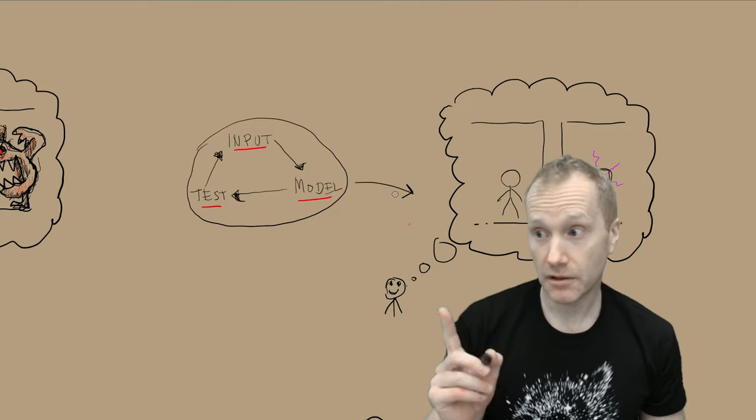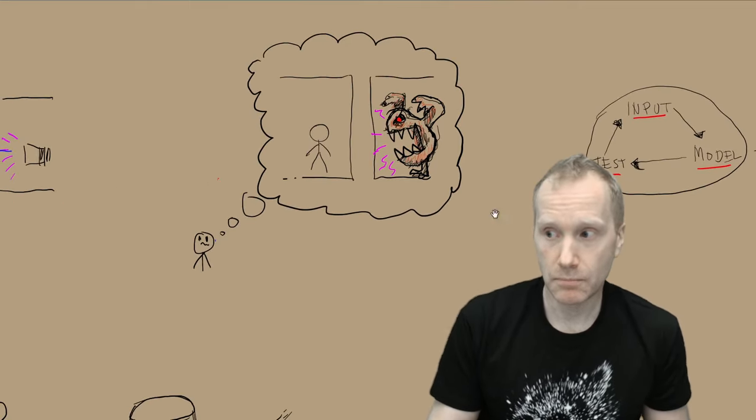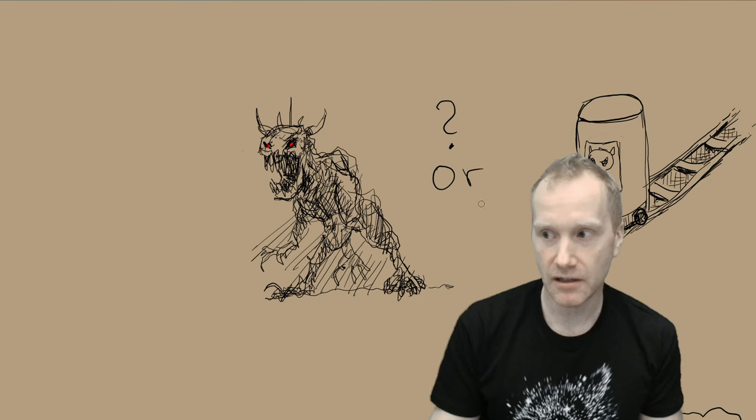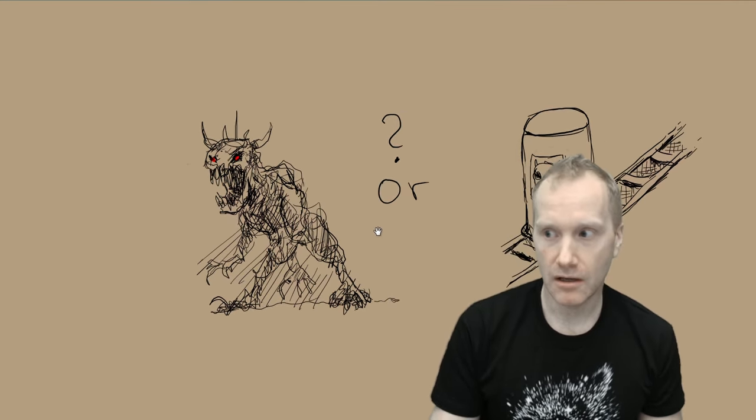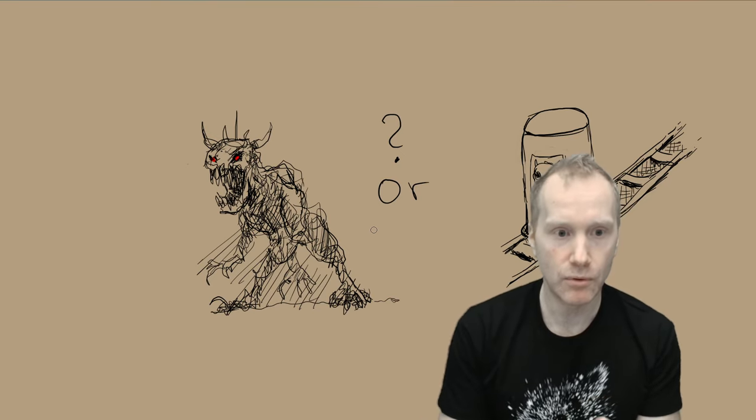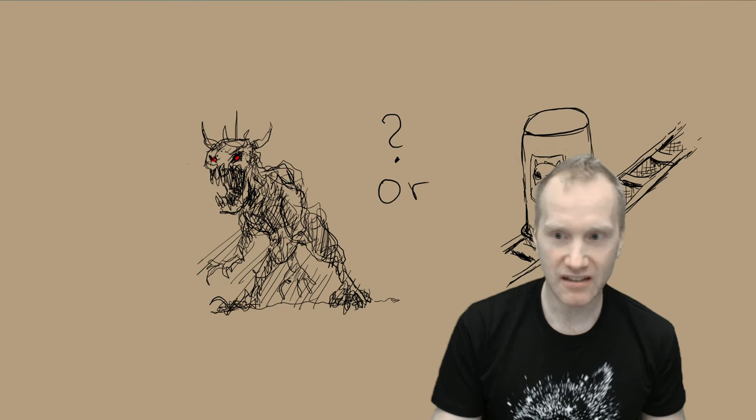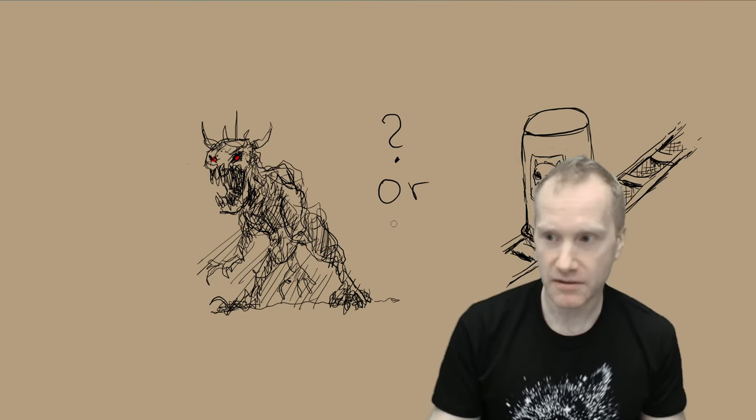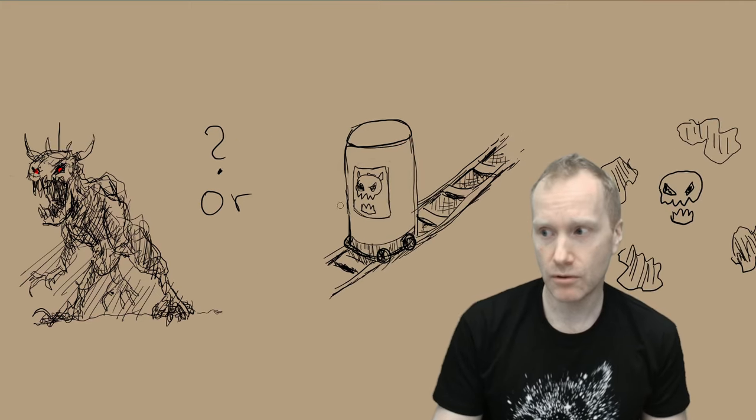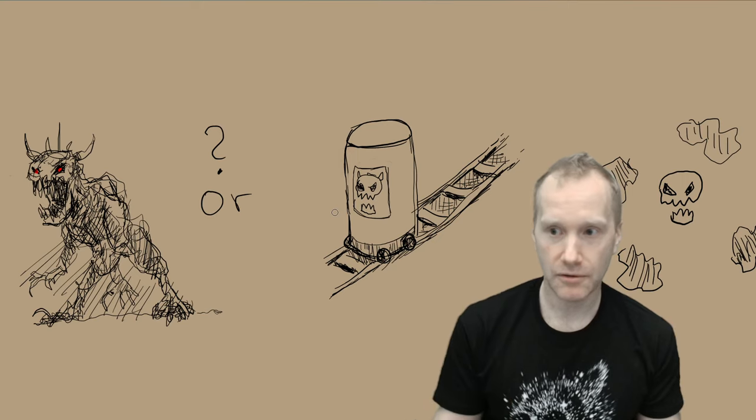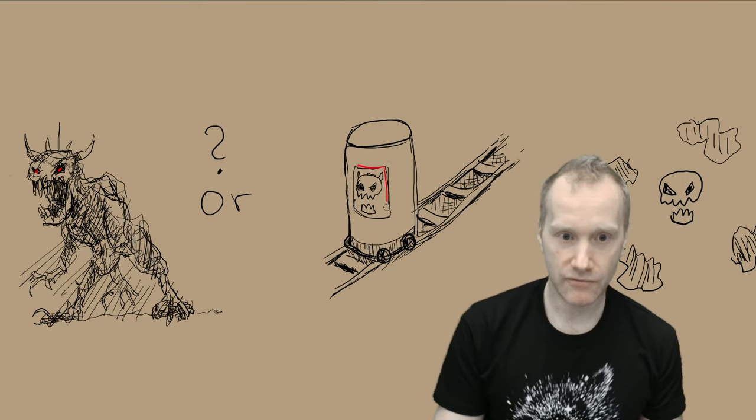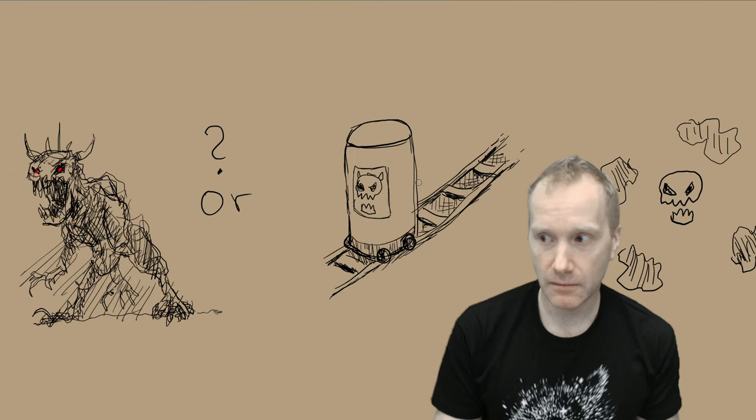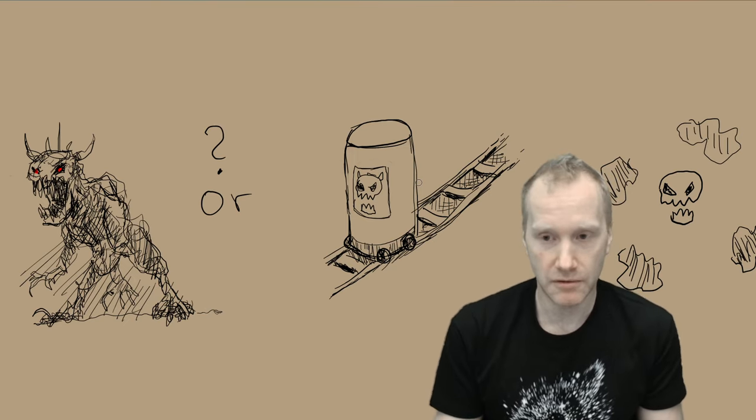And in the bad case, which happens a lot in horror games actually, the player might find out it's a speaker playing a noise. And they find out that through updating the model, and this is what we want to avoid. This is the mental model of the situation. Note, and I'm going to get back to this, the input hasn't changed, but the player's mental model of the situation has.